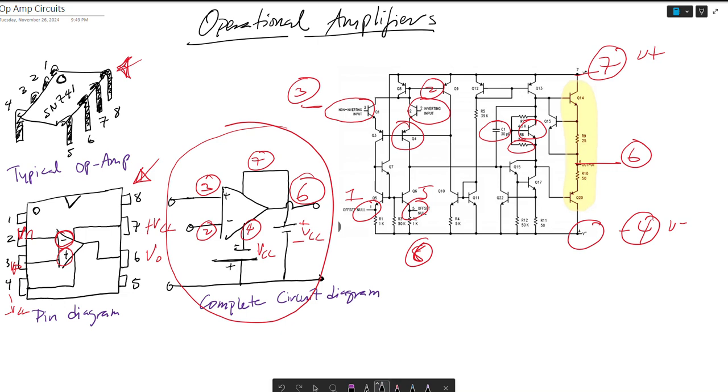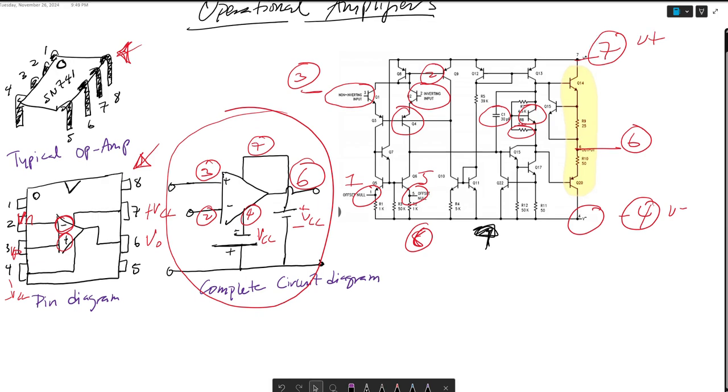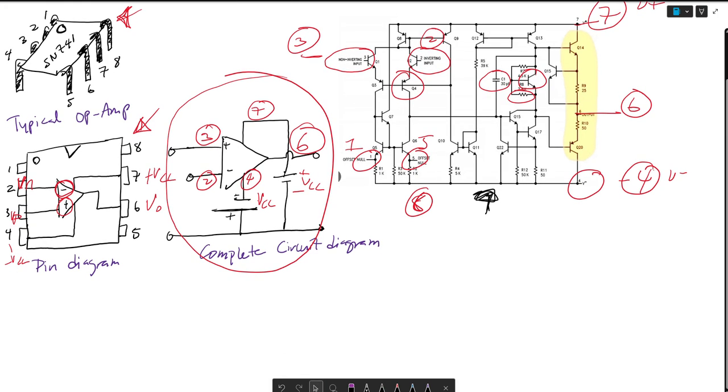In general, how we want to model this thing is with an equivalent circuit. If you want to know more about equivalent circuits, check out my circuits 1 playlist lecture 3. Essentially, we want to model this like an equivalent circuit that looks like a huge resistance coming in, RI, and a voltage controlled voltage source and an output resistance RO, which is very small.